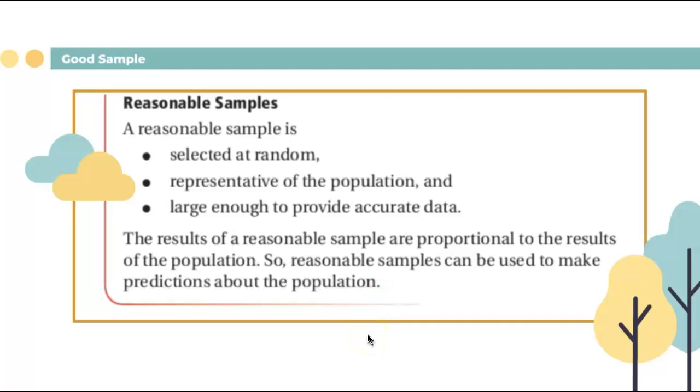If your population is 1400, a sample size of five is not good. Maybe a hundred is more reasonable for that. So the result of a reasonable sample are proportional to the result of the population. So reasonable samples can be used to make predictions about the population. So that will give you an example of what's going to happen in the next step that you're going to have.